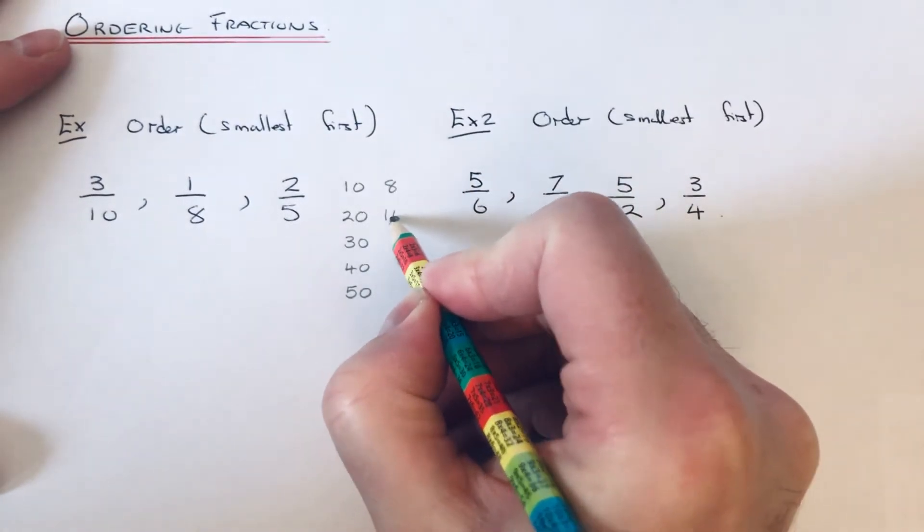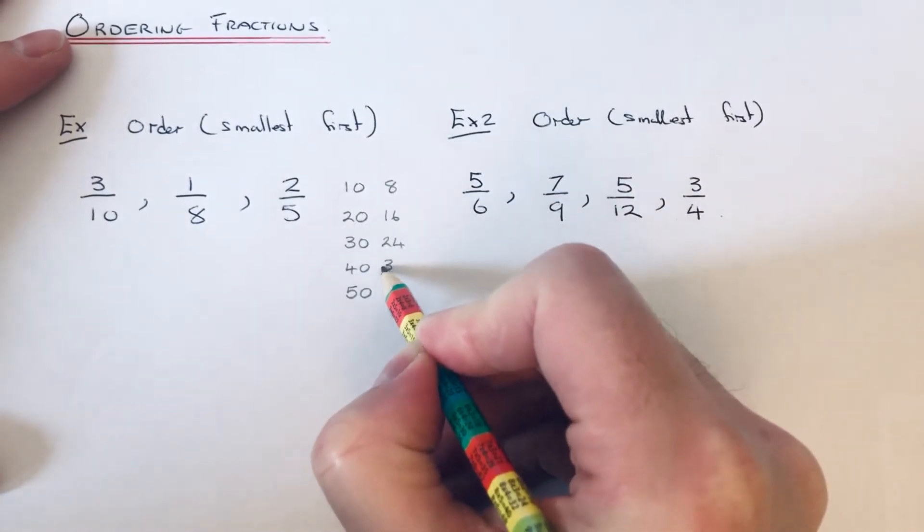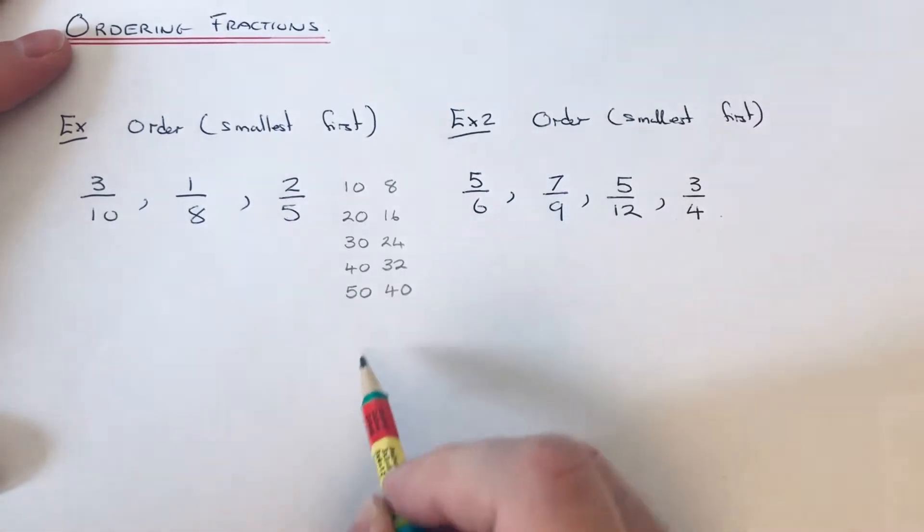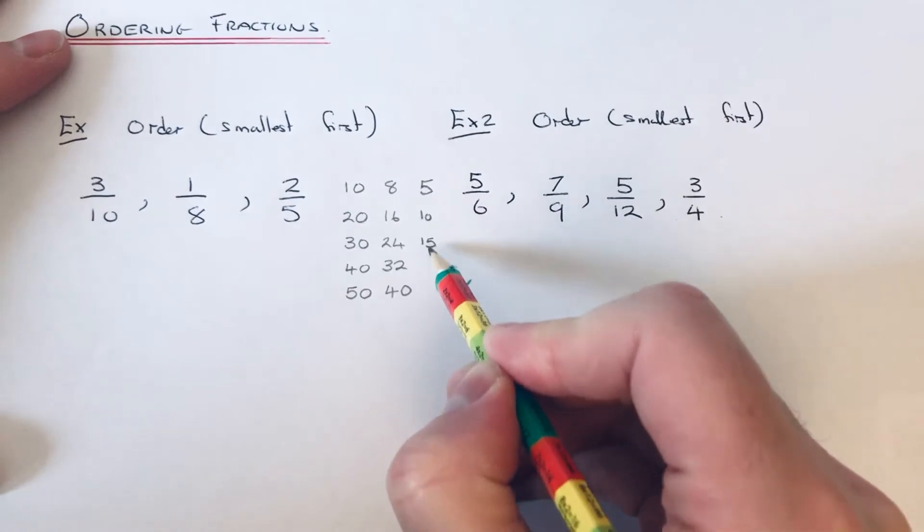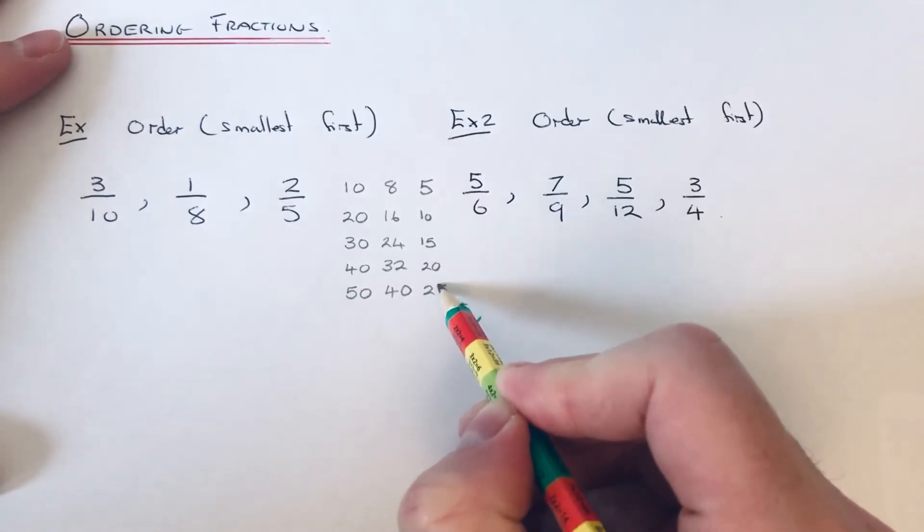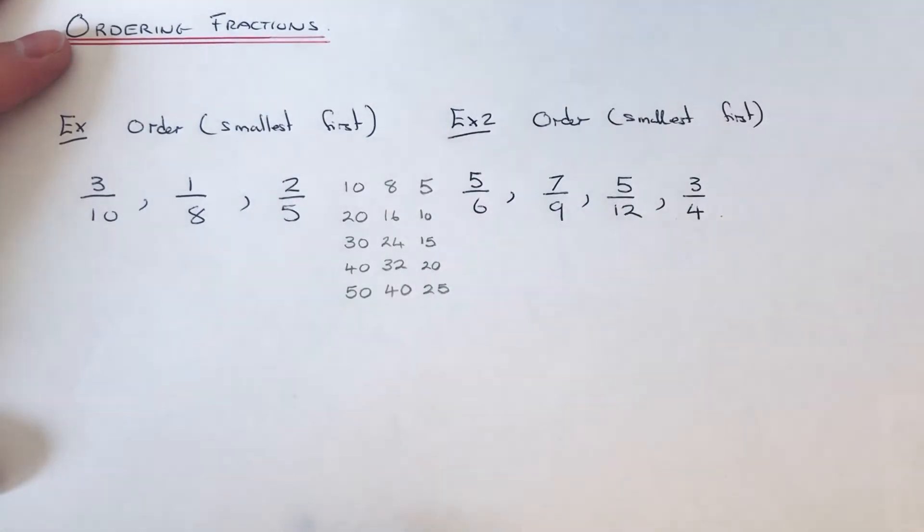I'm just going to continue with the 5. I think it's looking like 40. So there you go. Our lowest common multiple of our denominators is 40.